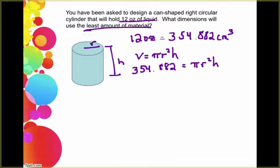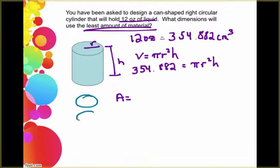But we're trying to minimize surface area, so let's come up with the formula for surface area. Well remember that a cylinder is actually made up of two circles, the top and the bottom, and then a rectangle. So to find the surface area I just want to add all those areas together.